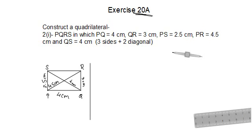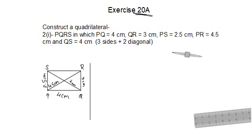We will be constructing quadrilaterals, and as I said before, we will be requiring any five elements of the quadrilateral. There are a total of 10 elements: four angles, four sides, and two diagonals. Out of these 10 things, we need any five elements.